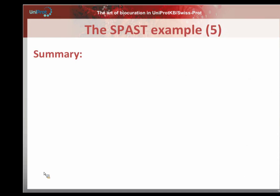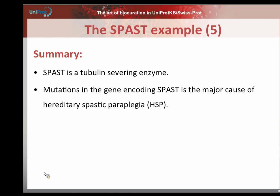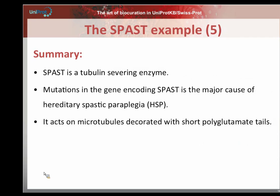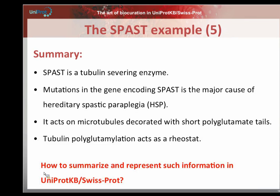Polyglutamylation of alpha and beta tubulin has been known for more than 20 years. The enzymes that mediate and remove polyglutamylation are also known for more than 10 years. But we didn't know until now what the precise role of polyglutamylation was. We are only now starting to understand its role in regulation of the cytoskeleton. To summarize: spastin is a tubulin severing enzyme, associated with hereditary spastic paraplegia, and specifically acts on microtubules decorated with polyglutamate tails — with tubulin polyglutamylation acting as a rheostat.